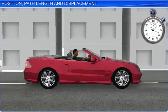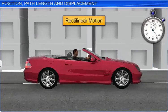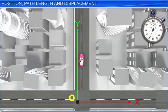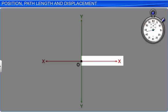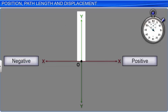Let us examine rectilinear motion more closely. To study the motion of a body along a straight line, we align the straight line along one of the axes, which is usually either the X axis or the Y axis, and then choose a convenient origin O. Positions to the right of O are taken as positive and to the left of O as negative. Positions above O are taken as positive and below O as negative.